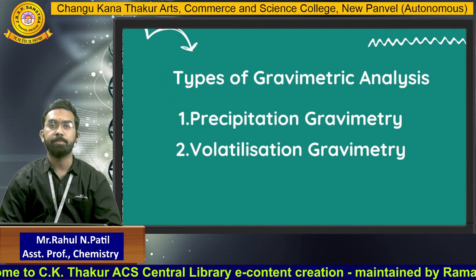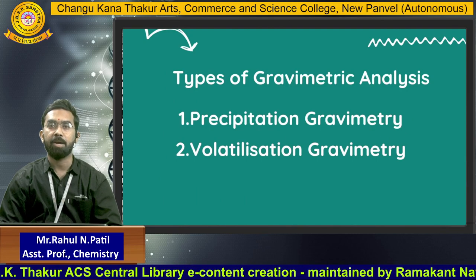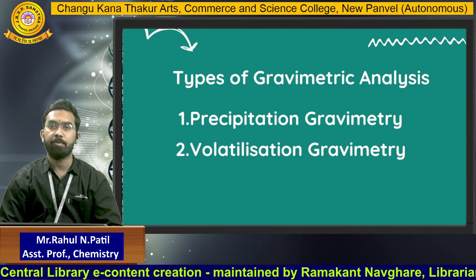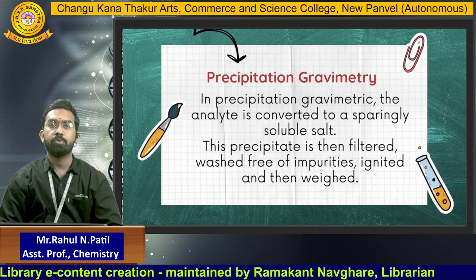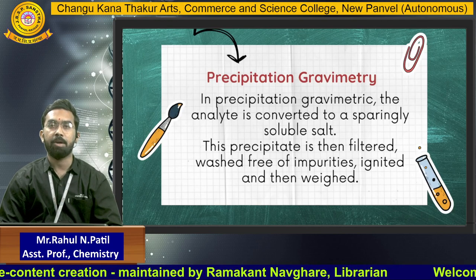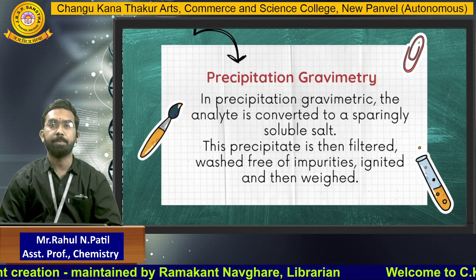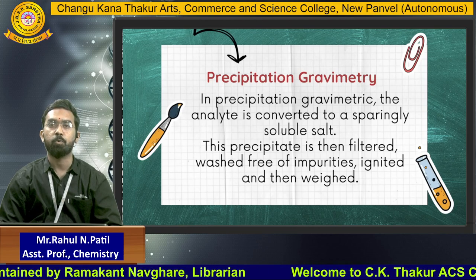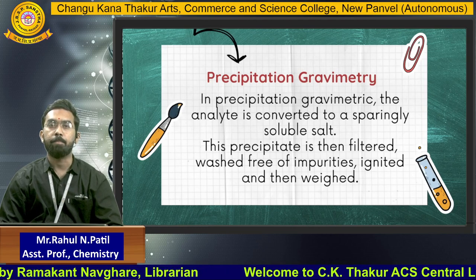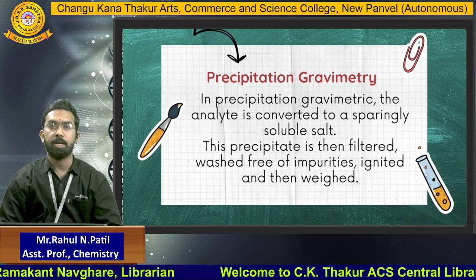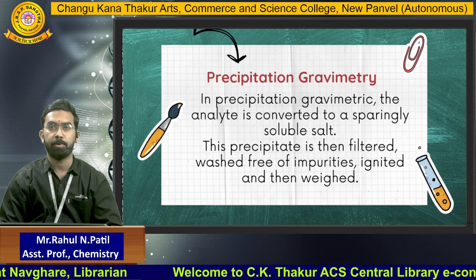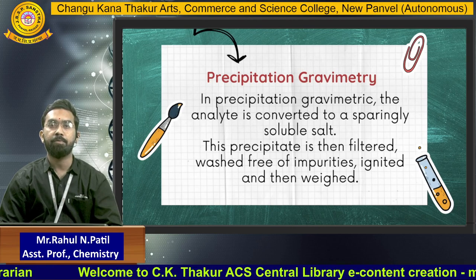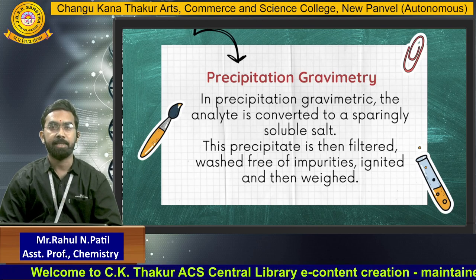There are two types. First, precipitation gravimetric analysis, and second, volatilization gravimetric analysis. In precipitation gravimetric analysis, the analyte is converted to a sparingly soluble salt — meaning it is not completely soluble. This precipitate is then filtered, washed free of impurities, ignited, and then weighed.